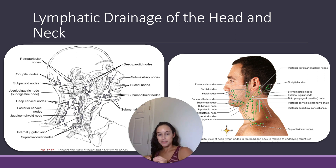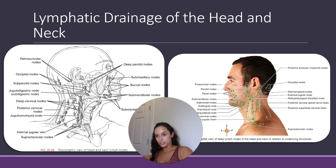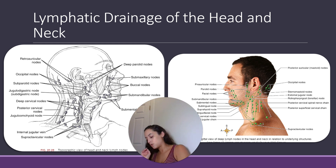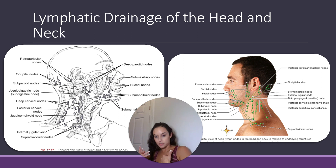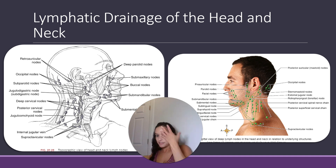Remember this for your boards: your subdigastric node, AKA jugulodigastric node — be prepared to know both names — and also your jugular omohyoid node. The deep cervical nodes supply efferent flow to form the jugular trunk, which drains into the thoracic duct or the right lymphatic duct depending on which side of the head and neck. Remember, the right side drains into the right lymphatic duct and the left side drains into the thoracic duct.